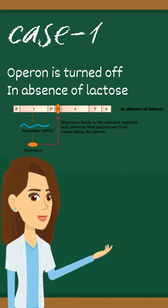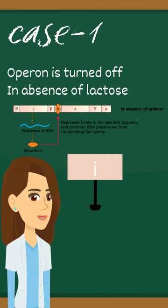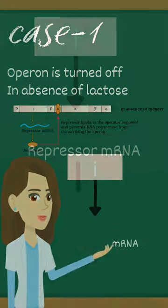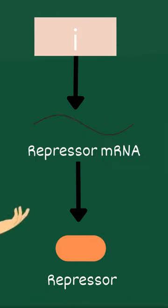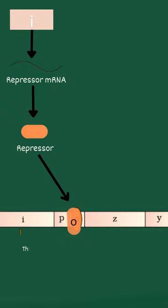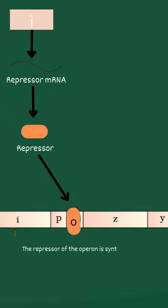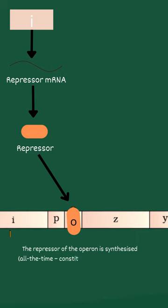In the absence of lactose, the operon is turned off. The I gene codes for the repressor mRNA, which further leads to the synthesis of repressor protein. This repressor binds to the operator, and the operon shuts off.